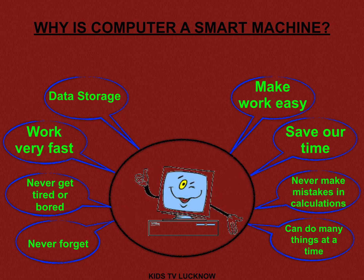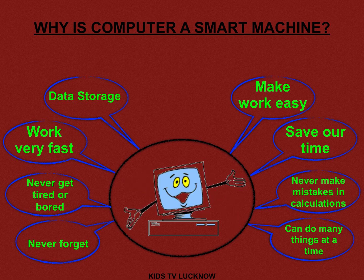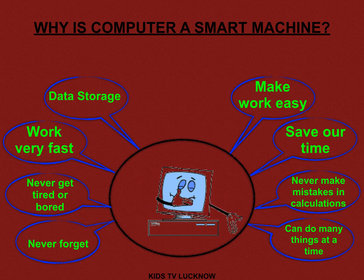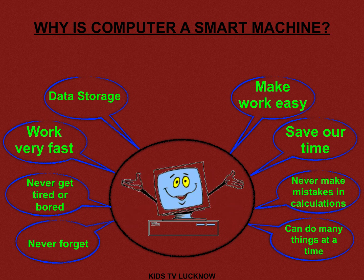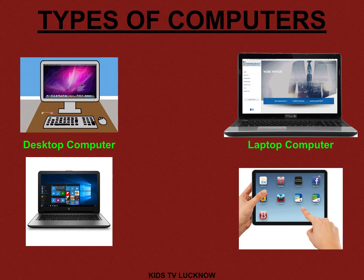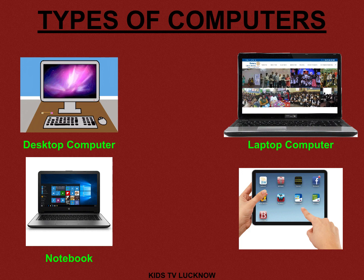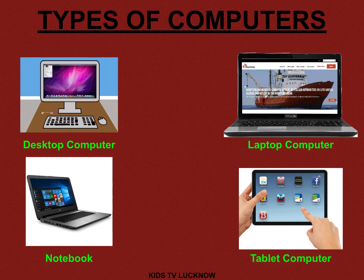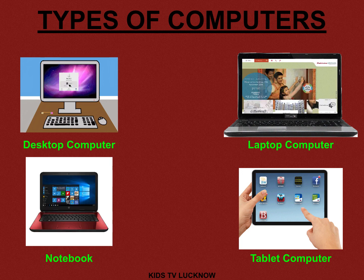Next: computers can do many things at a time. Computers are so efficient that if many tasks are given to them, they can perform all of them very nicely in just a few minutes. Now let us see the types of computers. There are different kinds of computers available. As you can see the pictures, there are four types: desktop computer, laptop computer, notebook, and tablet computer.